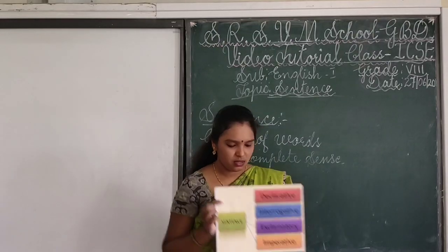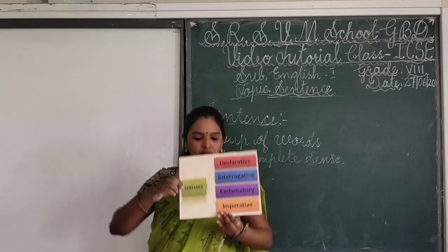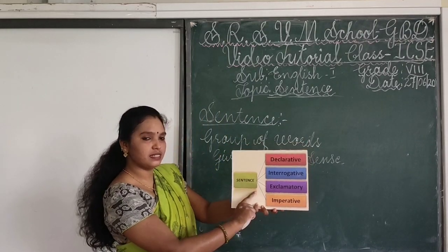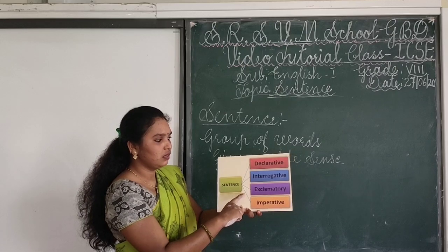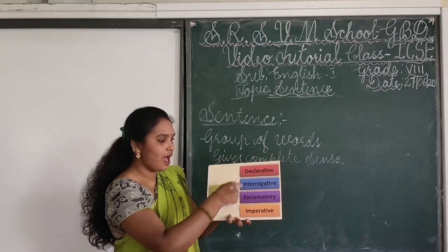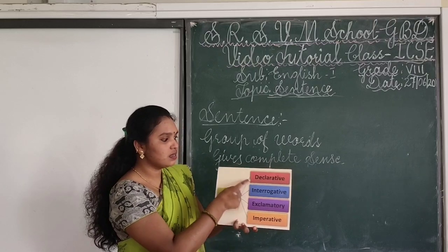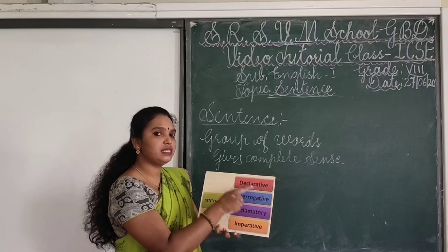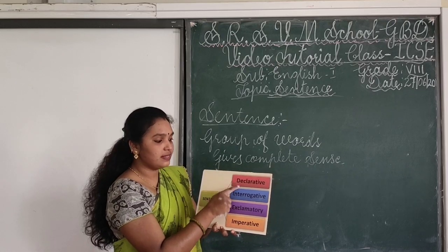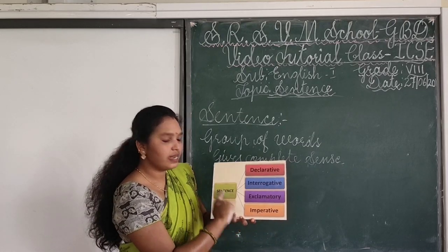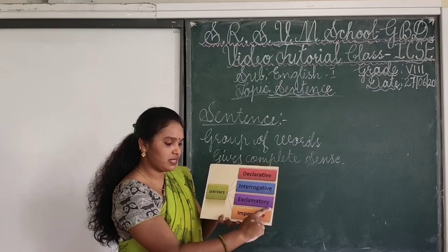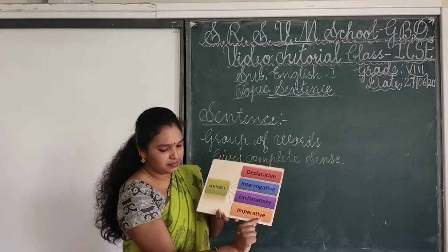Students, can you find something here? Here I have the sentence and the types of sentences. A sentence has types, that is, a declarative sentence — also called an assertive sentence. The next is an interrogative sentence, then an exclamatory sentence, and then an imperative sentence.